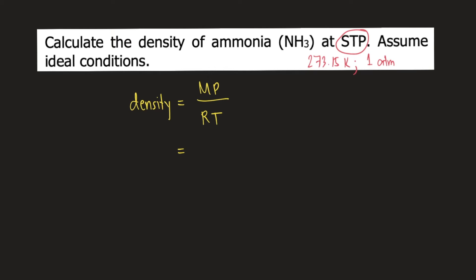Capital M stands for the molar mass of the gas. In our problem, the gas is ammonia and the molar mass of NH3 is 17.034 grams per mole.